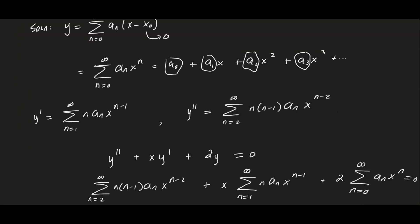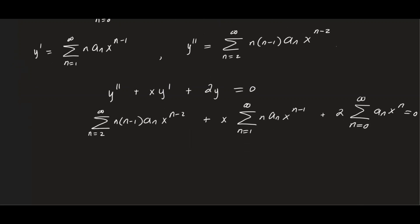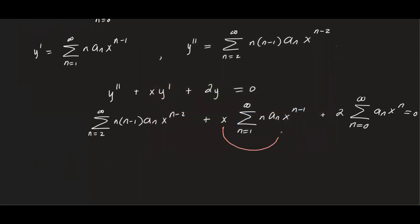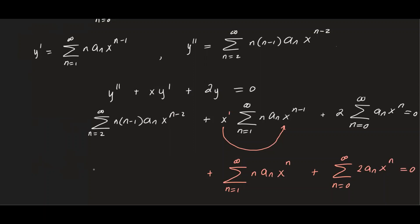Now we use properties of summation to combine terms and work toward a recurrence relation. For the second summation, we push the x inside and combine it with x to the n minus one, giving the sum from n equals one to infinity of n aₙ x to the n. For the last term, pushing the 2 inside gives the sum from n equals zero to infinity of 2aₙ x to the n. The first summation remains the sum from n equals two to infinity of n(n−1)aₙ x to the n minus two.